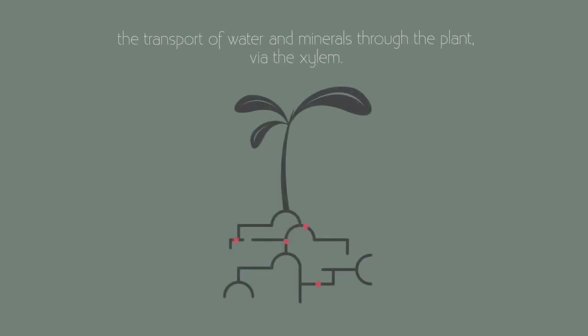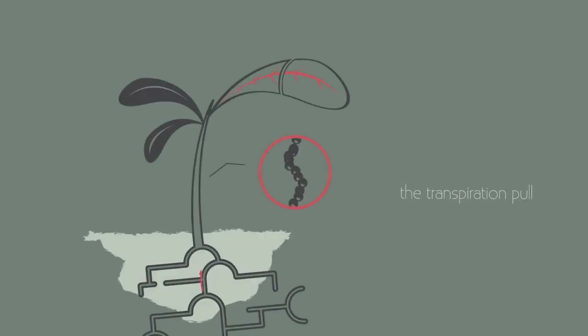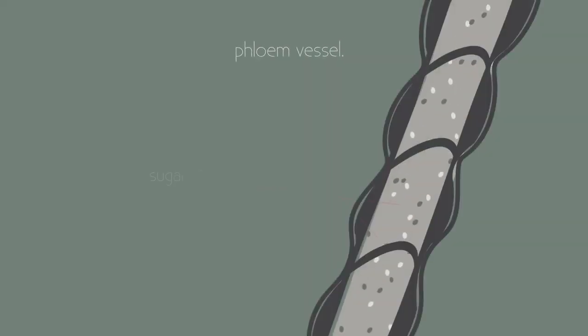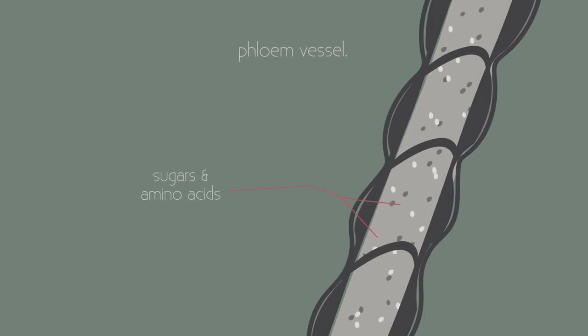So in these three videos, we have learnt all about the transport of water and minerals through the plant, via the xylem. The transpiration of water in the leaf creates a transpiration pool, which almost physically pulls the water up through the plant. Just picture pulling water up from a well, and that is what is happening. We then also learnt about the energy-driven translocation of sugars and amino acids in the phloem.